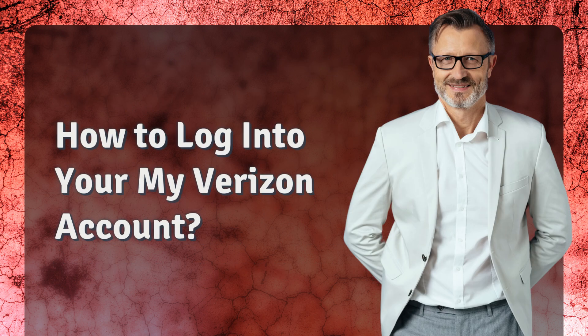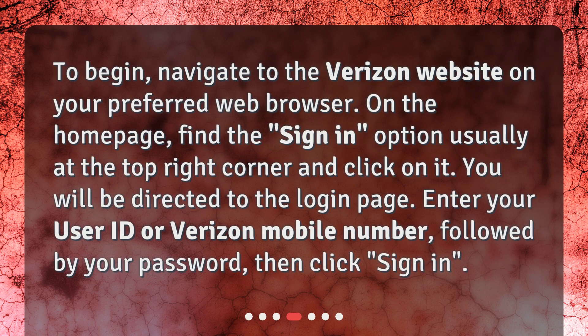How to log into your My Verizon account? To begin, navigate to the Verizon website on your preferred web browser. On the home page, find the sign-in option, usually at the top right corner, and click on it. You will be directed to the login page. Enter your user ID or Verizon mobile number, followed by your password, then click Sign In.